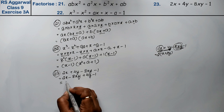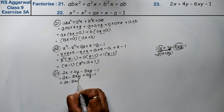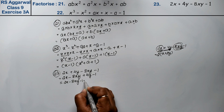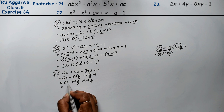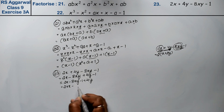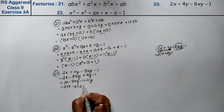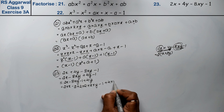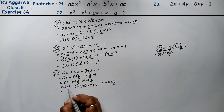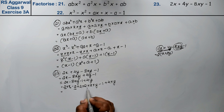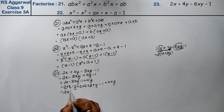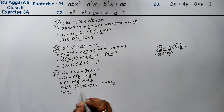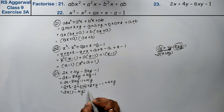Now we can write it as: 2 into x minus 2 into 2 into x into y, minus 1 plus 4 into y. Look at the first two terms — 2 and x are common. So 2x is common. What is left? Nothing here, so 1 minus 4y remains from the second group.